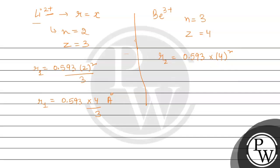3², and n is 4. So by correcting this we will get 0.593 multiplied by 9 divided by 4. So this is r2's value.